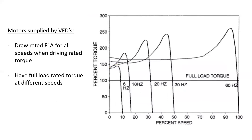Motors supplied by VFDs draw rated FLA for all speeds when driving rated torque. That means we could be running the motor at very low speed driving its full rated torque, or at three-quarter speed, or full speed — at each speed, the current drawn should be approximately equivalent to the motor nameplate FLA. Motors supplied by VFDs also have full load rated torque at different speeds, allowing very accurate control of torque delivery at every speed.